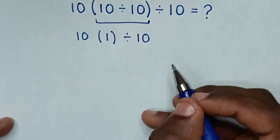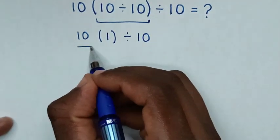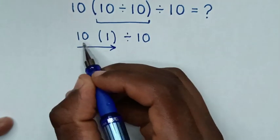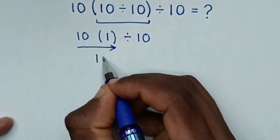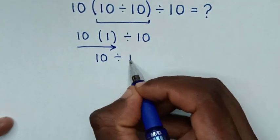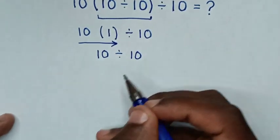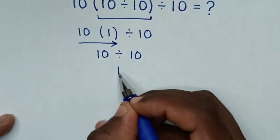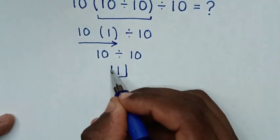Then we deal with the first operation from left to right. So 10 times 1 is 10, then divide by 10. So 10 divided by 10 is 1. This is our final answer.